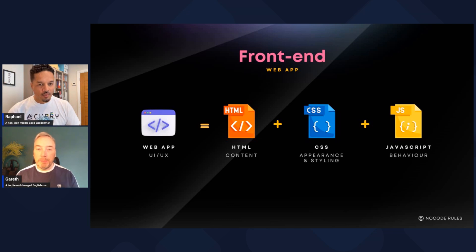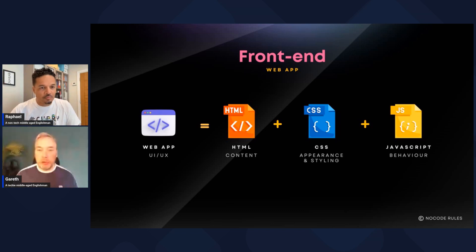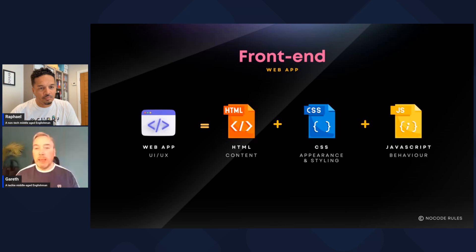Essentially you've got your HTML, which is for your content — what appears on screen. CSS gives it the styling and appearance to make it look nice. Then you've got JavaScript. HTML and CSS builders have been around since the very early days of the web — things like FrontPage, Dreamweaver. What no-code really does is automate the third part: JavaScript — the behavior, the logic of the application.